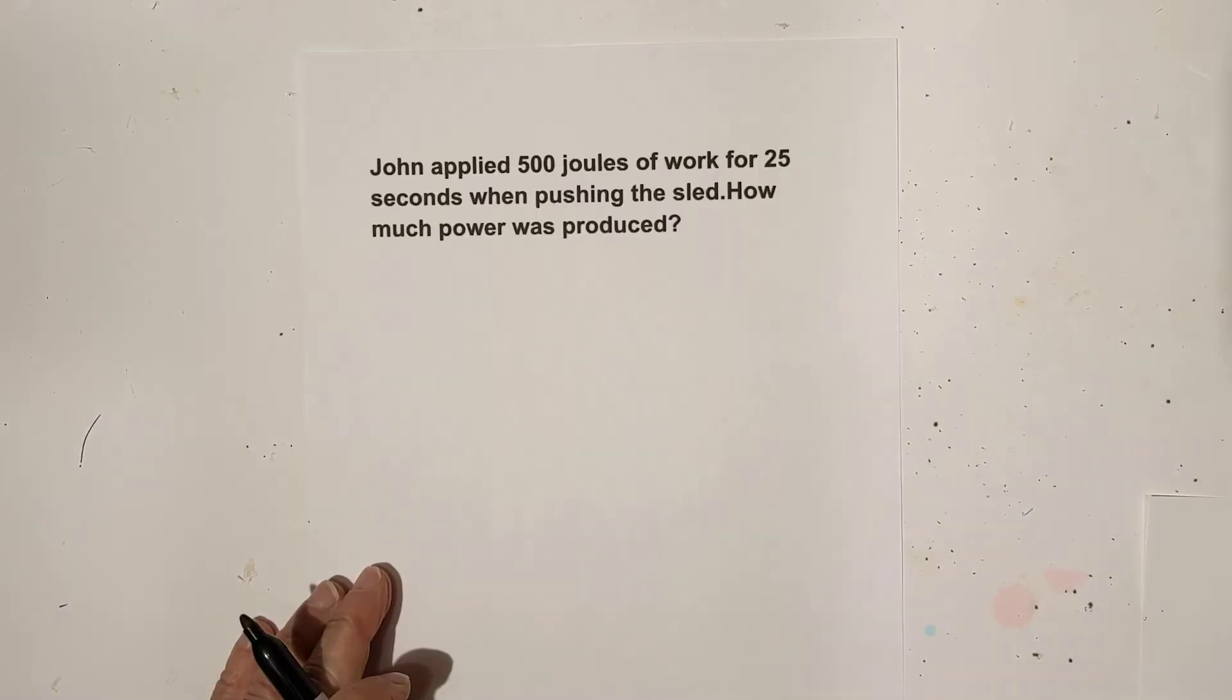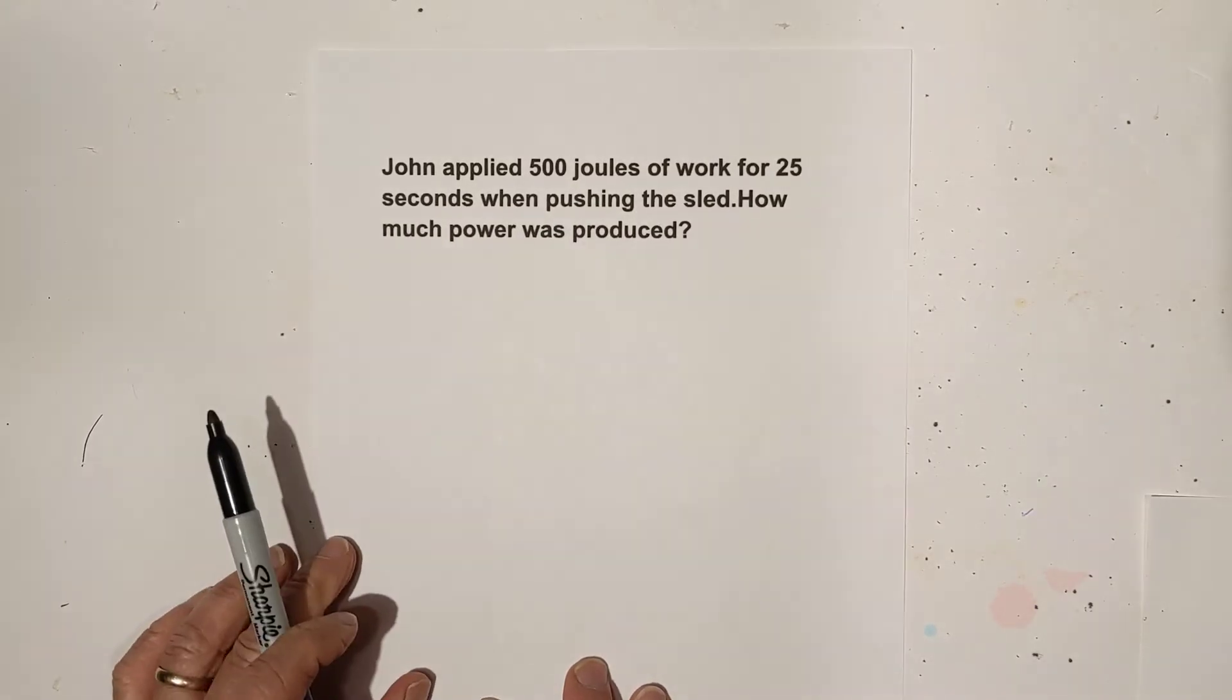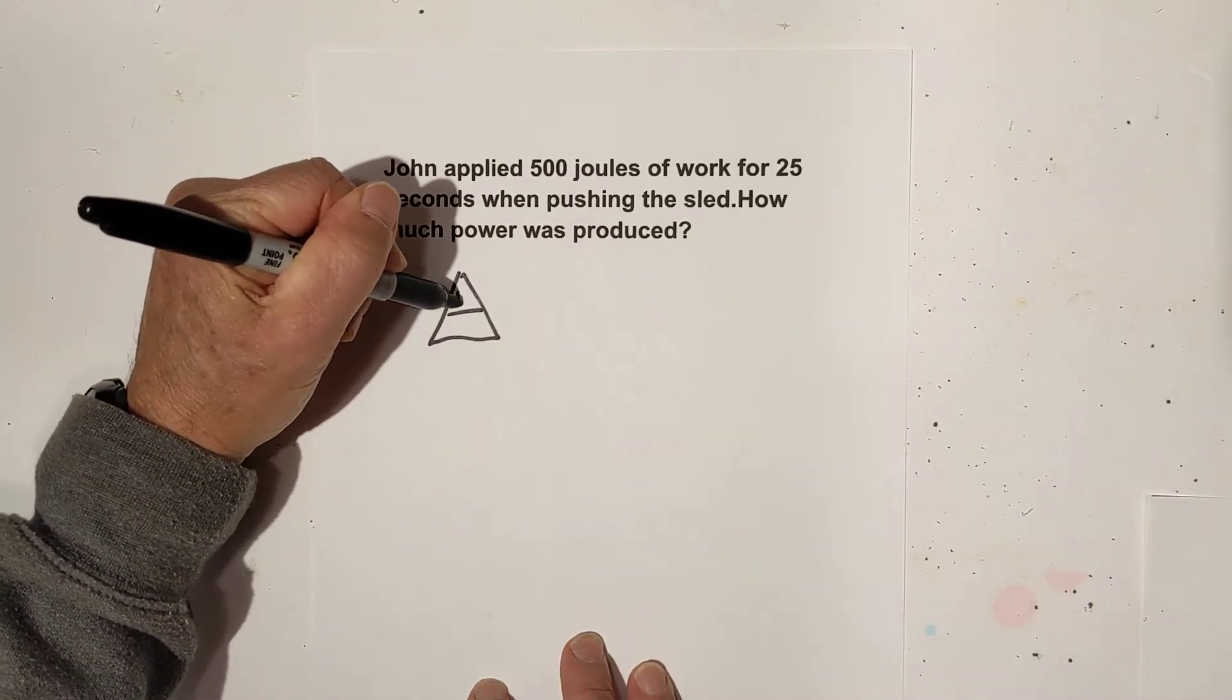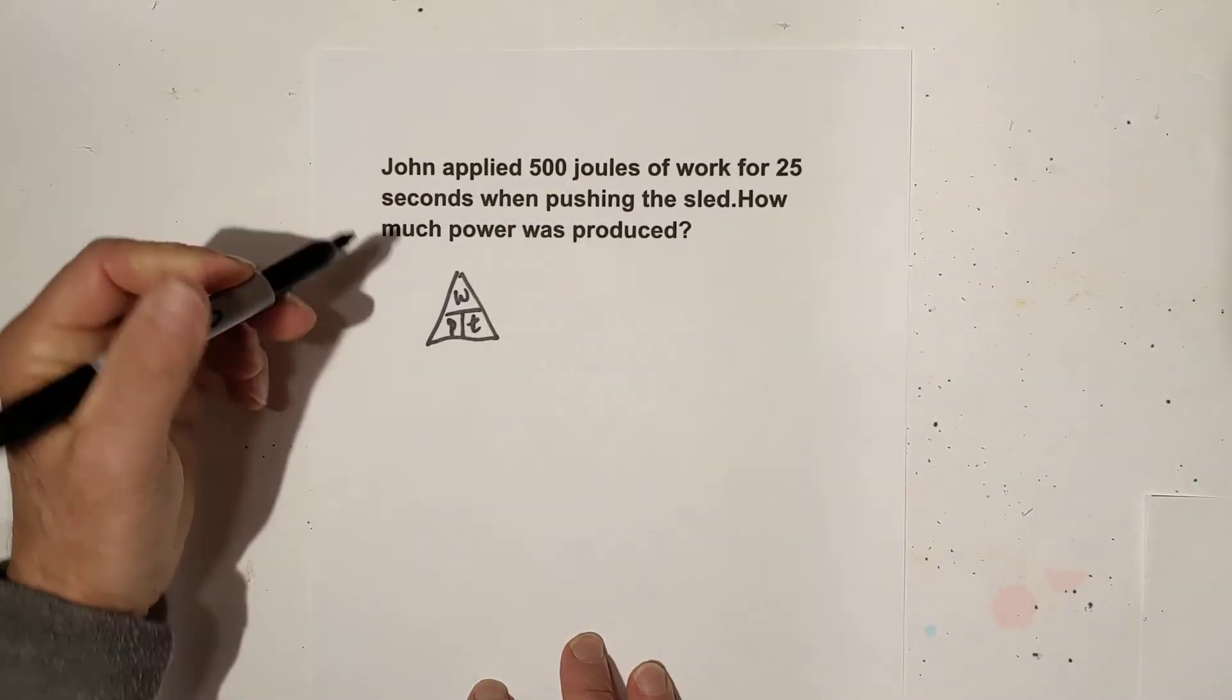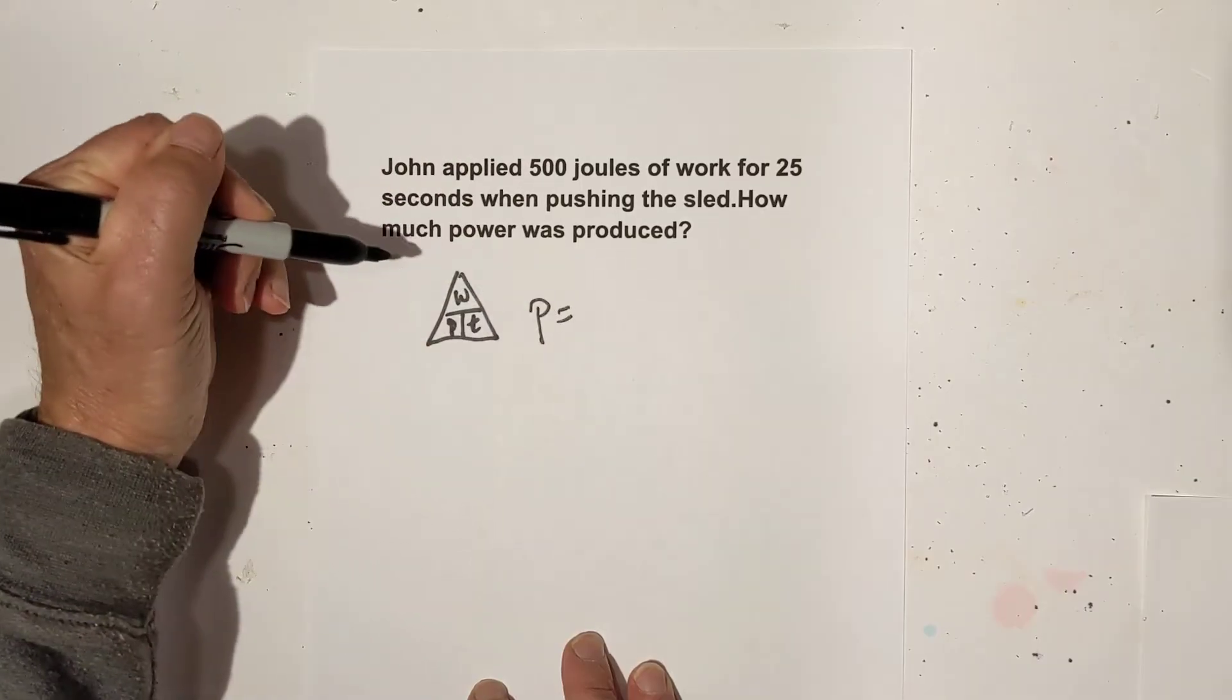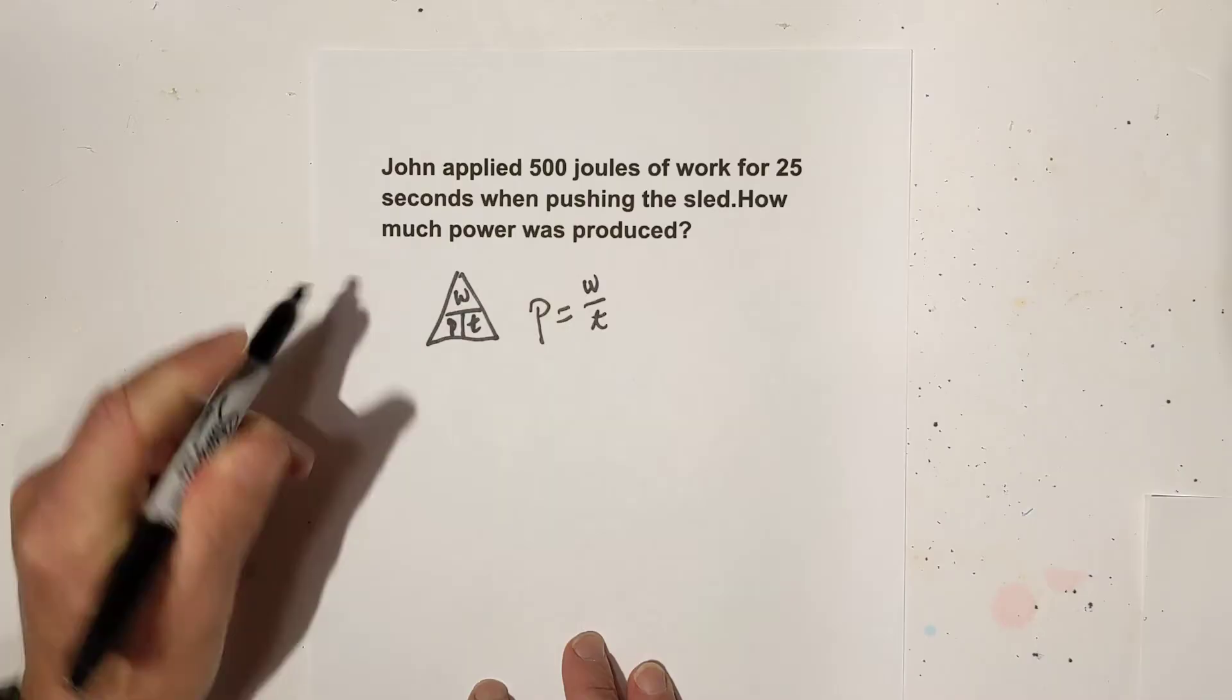Let's look at another example. This time we have John applied 500 joules of work for 25 seconds when pushing the sled. How much power was produced? Again, I'm going to draw this chart. And so we are looking for power.